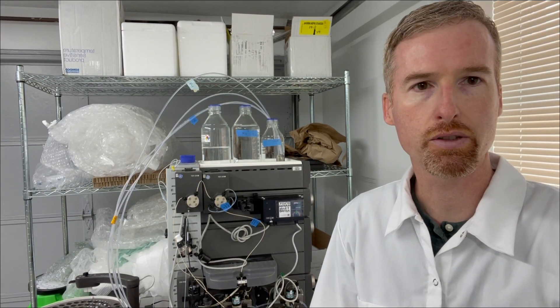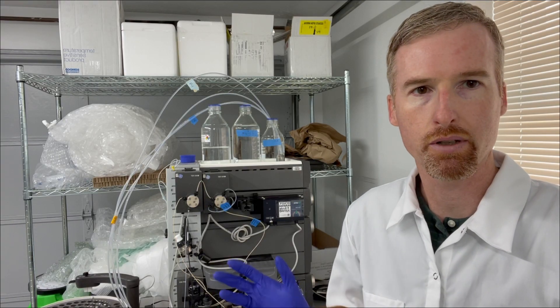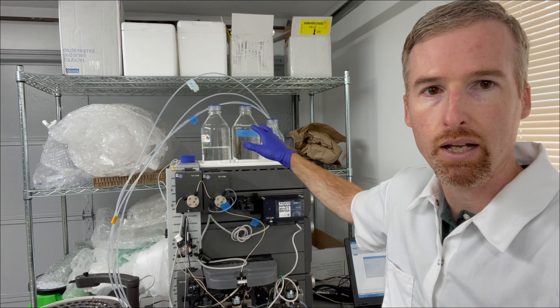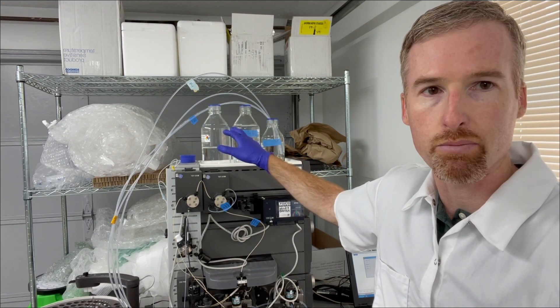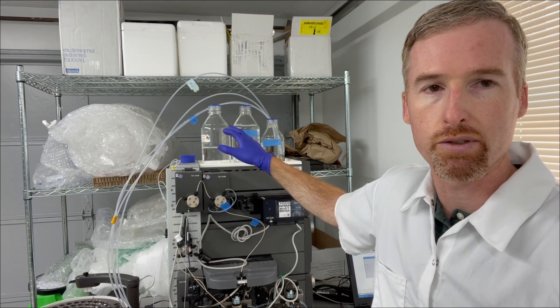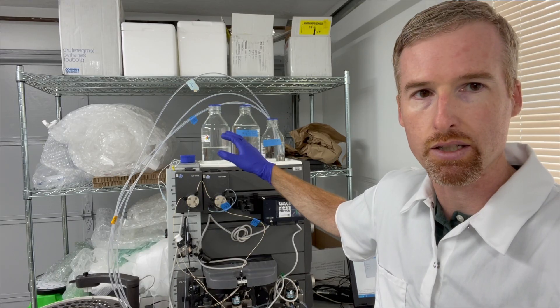Okay, so I finished filtering and degassing my buffers and water and I'm here at the FPLC. You can see I have one liter of buffer A, half a liter of buffer B, which is just the same as buffer A but with 1.5 molar salt added to elute proteins from our anion exchange column.